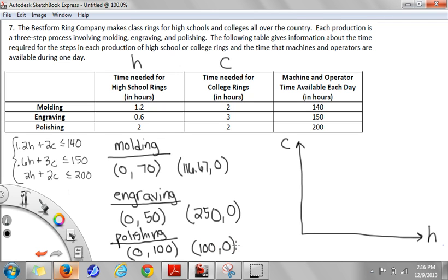Now that I have all my intercepts, I can go ahead and sketch a graph. Let's see, my biggest value is 250. So I think I will scale this so that it's counting up by 50s. So we'll make this 100, 200, same on the y-axis. Okay, so for molding we have a y-intercept of 70 and an x-intercept of 116.67, which will be about right there. And all of these are going to be graphed with solid lines.